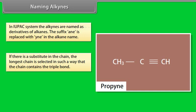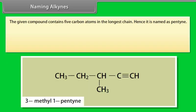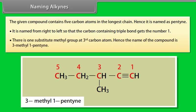If there is a substituent in the chain, the longest chain is selected in such a way that the chain contains the triple bond. Similarly, the chain is numbered so that the carbon containing the triple bond gets the least number. For example, the given compound contains 5 carbon atoms in the longest chain, hence it is named as pentyne. It is numbered from right to left so that the carbon containing the triple bond gets the number 1. There is one substituent — a methyl group — at the third carbon atom. Hence, the name of the compound is 3-methyl-1-pentyne.